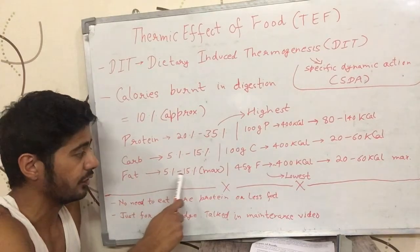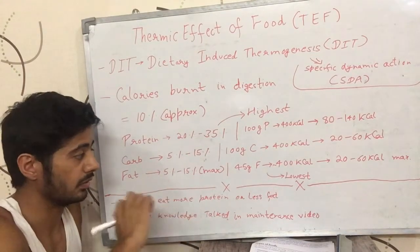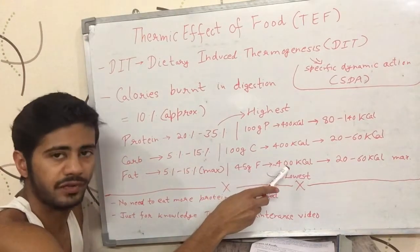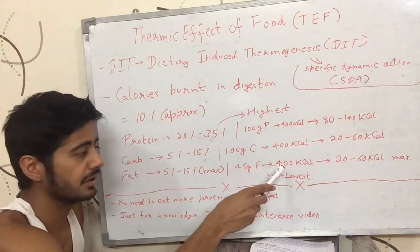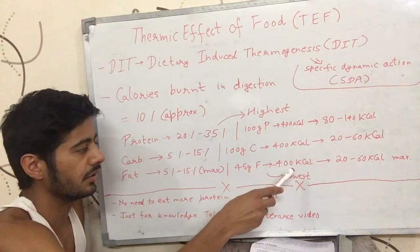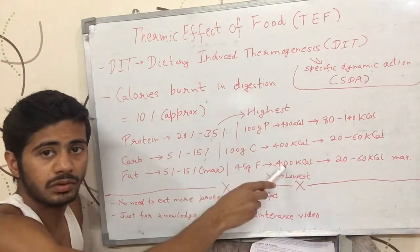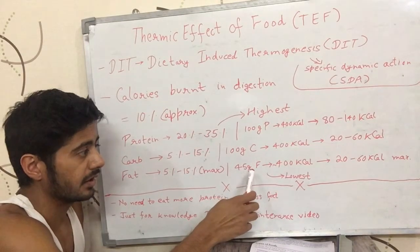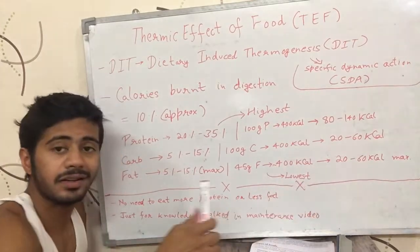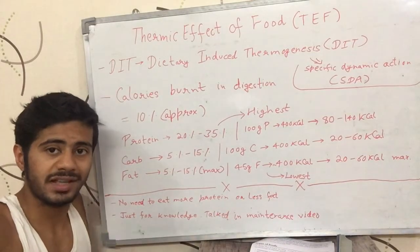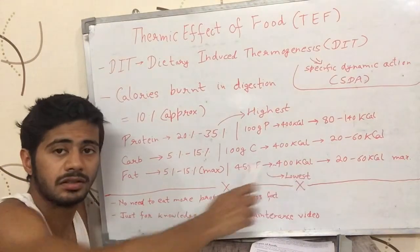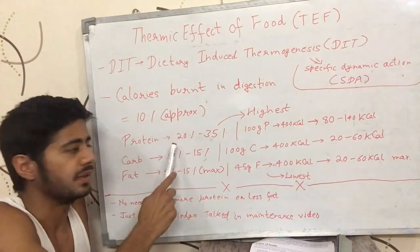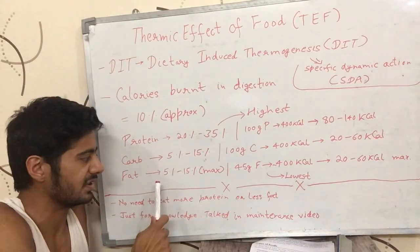For fat, let's say 45 grams of fat, which has about 405 calories (1 gram of fat has 9 calories). For approximation, let's round it to 400 calories. If you ate 45 grams of fat, it will burn off 20 to 60 calories to digest itself. So the highest TEF is of protein and the lowest TEF is of fat.